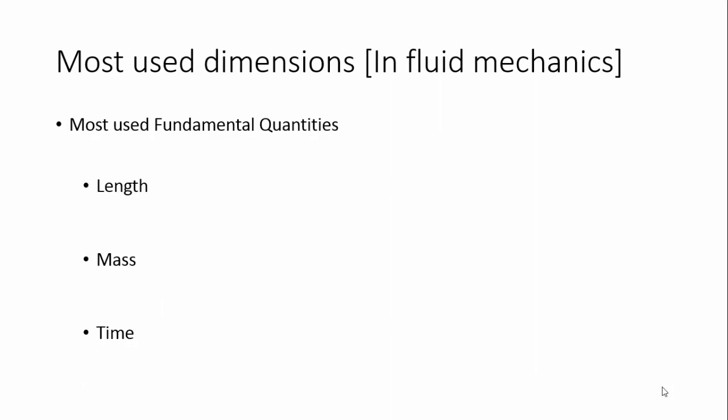These fundamental units are used in fluid mechanics very frequently. They are length, mass, and time. The unit of length is meter, whereas the fundamental dimension of length is L. Similarly, the unit of mass is kilogram, whereas the dimension of mass is M. The unit of time is second and its dimension is T.